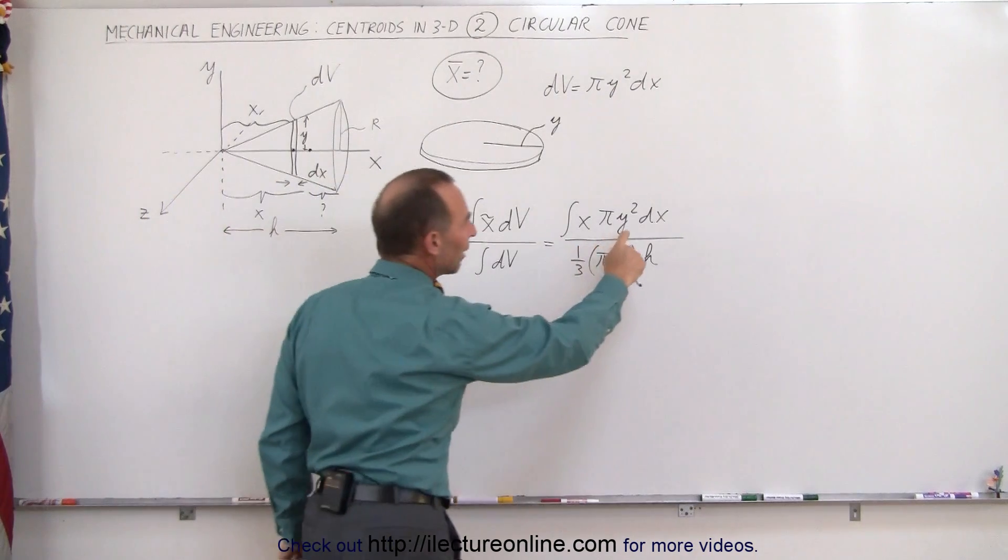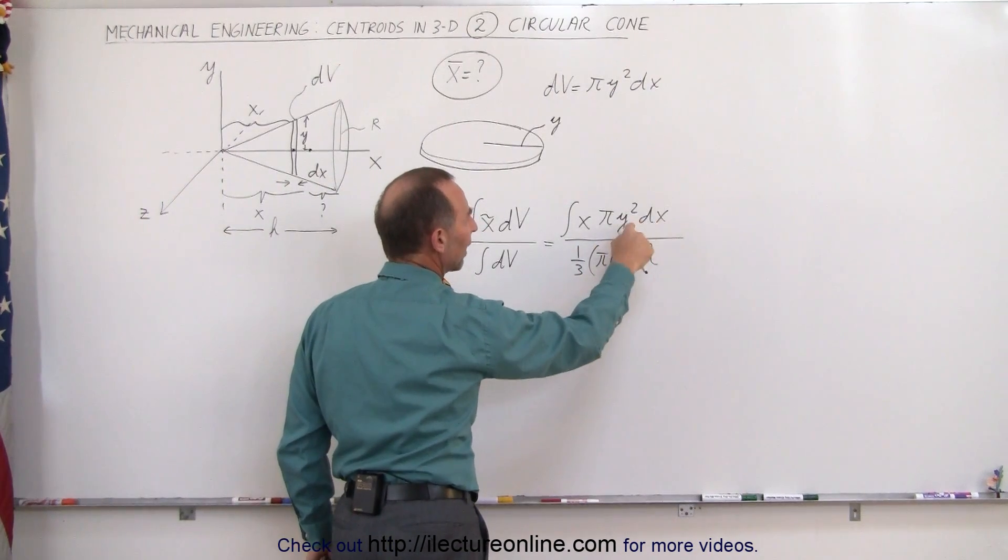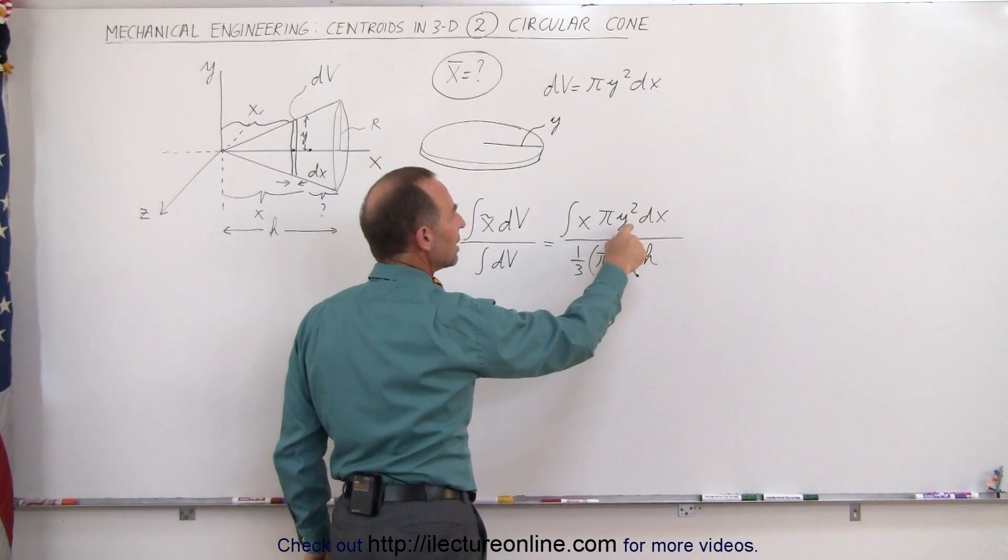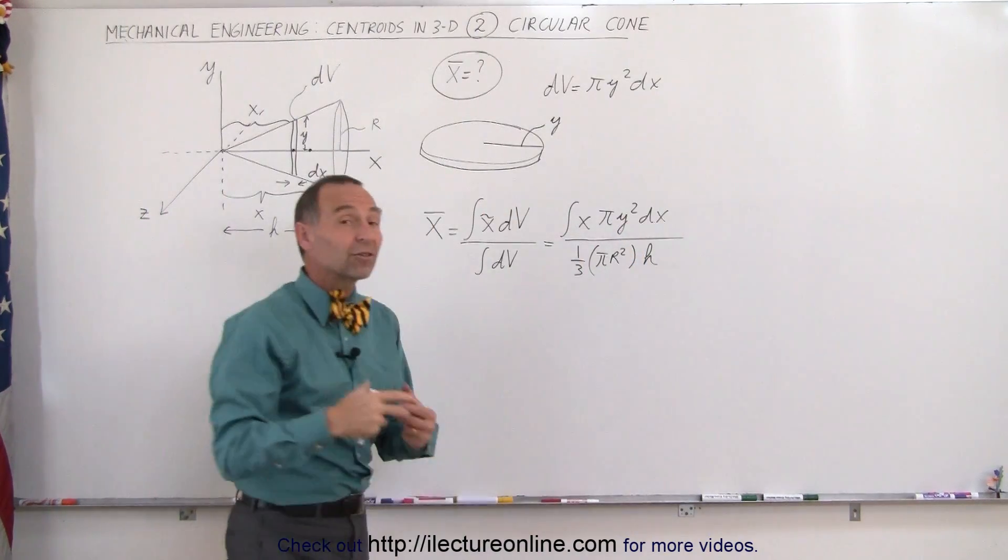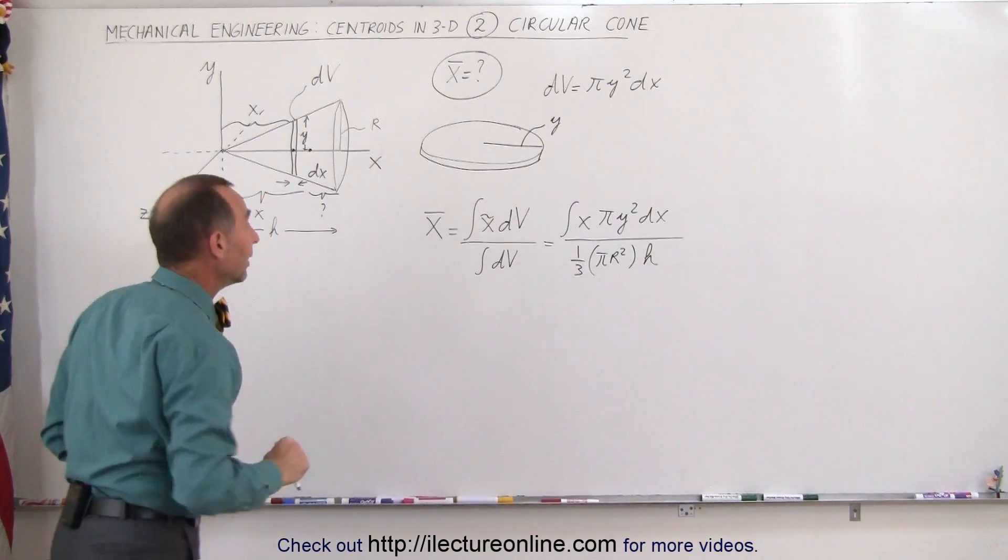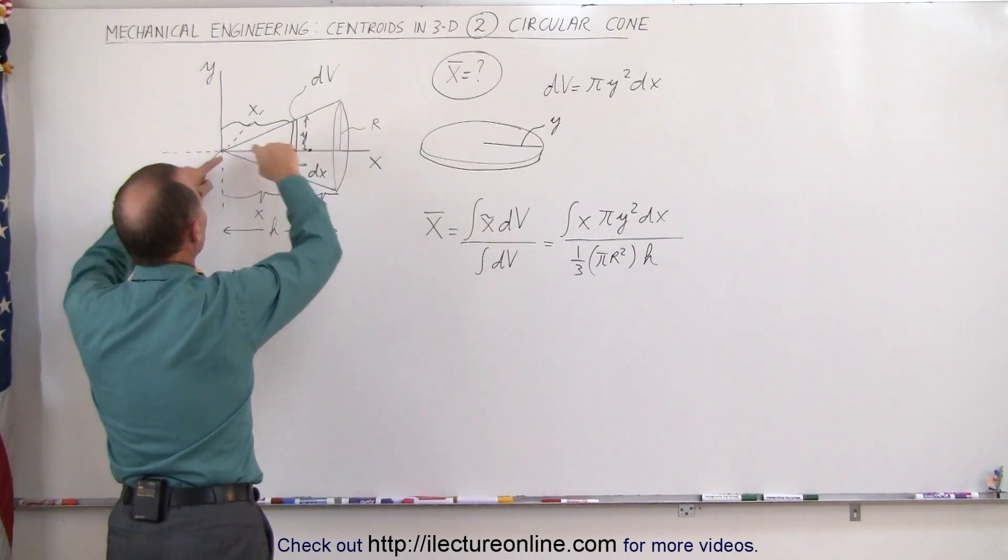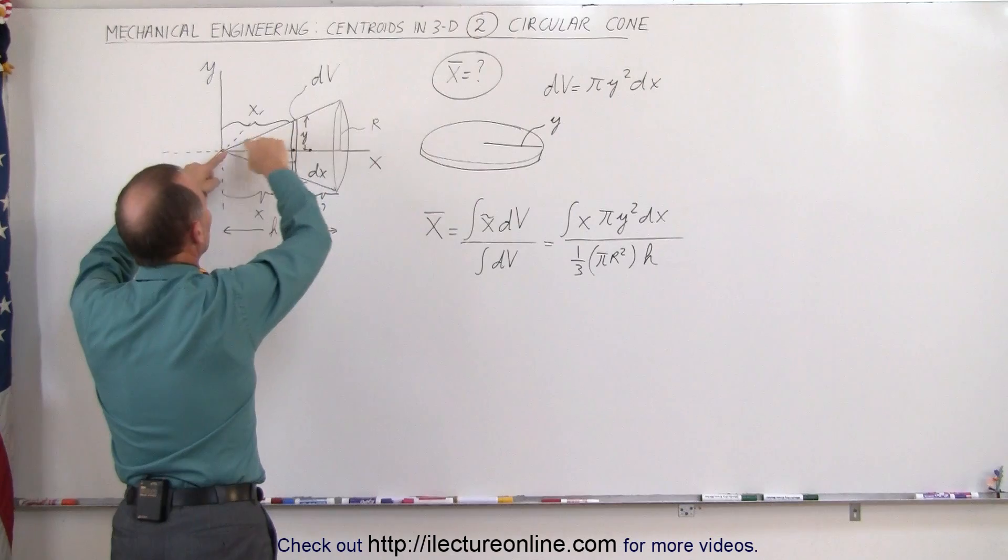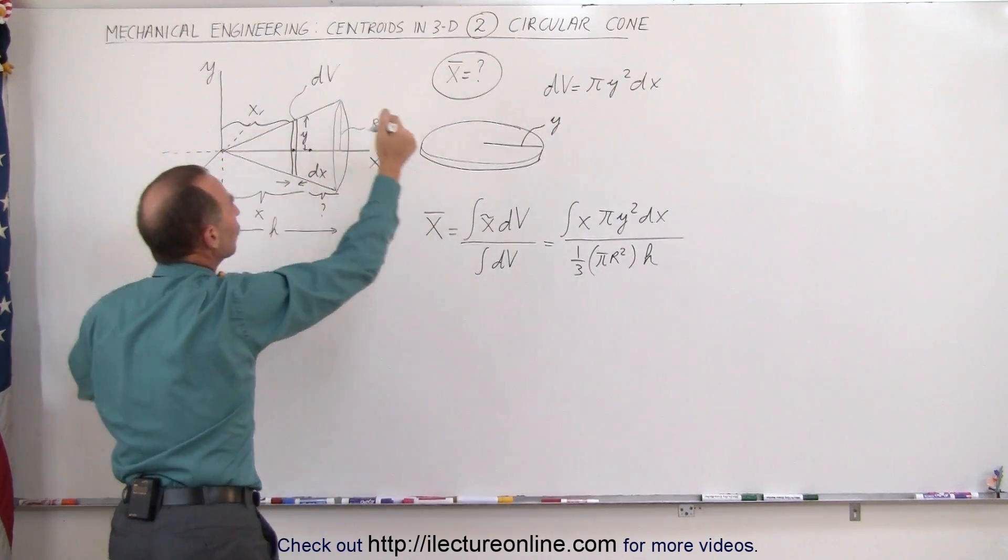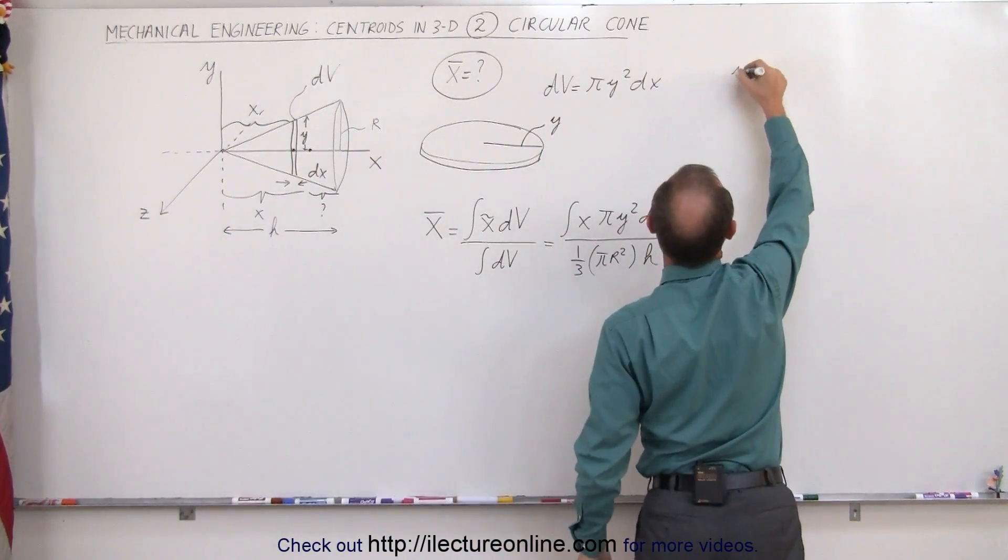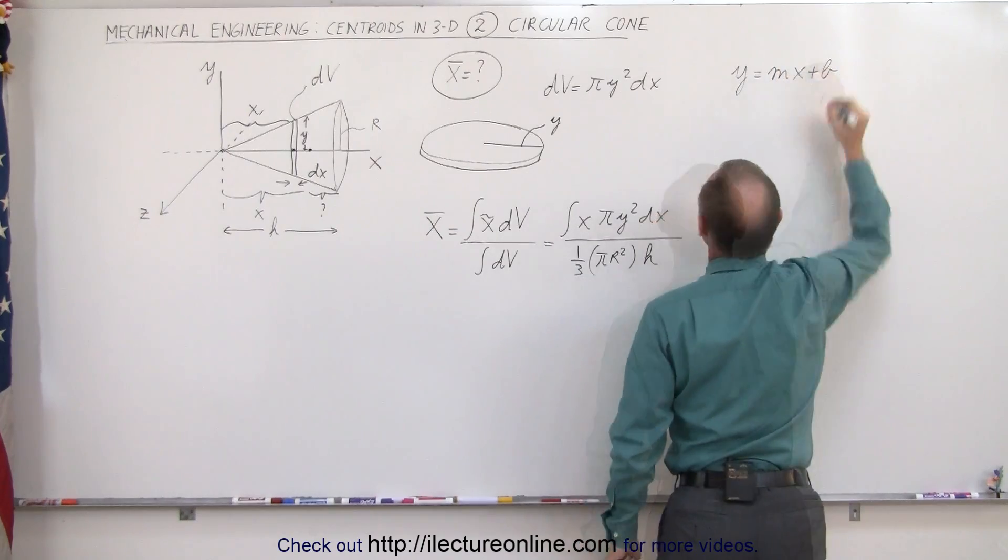In the numerator we have a y variable and an x so we have to somehow find the x equivalent of y or at least express y in terms of x. How do we do that? Well notice that the edge of the cone, if we just look at the very top edge, this looks like a straight line and we can use the concept of y equals mx plus b.